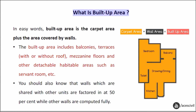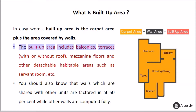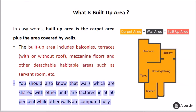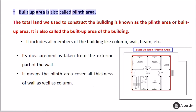What is built-up area? In easy words, built-up area is the carpet area plus the area covered by walls. The built-up area includes balconies, terraces with or without roof, mezzanine floors, and other detachable habitable areas such as servant room, etc. You should also know that walls which are shared with other units are factored in at 50%, while other walls are computed fully. Built-up area is also called plinth area.